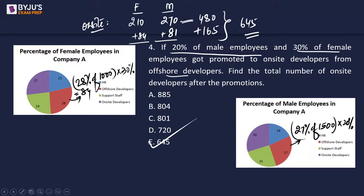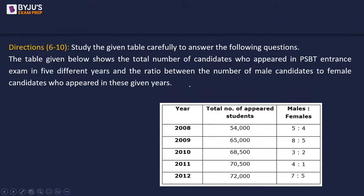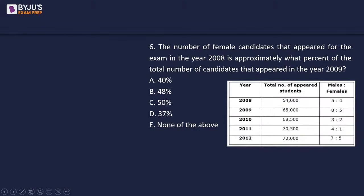Except for one question which looks like a typo — the answer should have been 645 — the rest were correct. Moving to the next set: a table showing the total number of candidates who appeared in the PSBT entrance exam over five different years (2008 to 2012), along with the ratio of male to female candidates for each year. We need to split the totals accordingly.